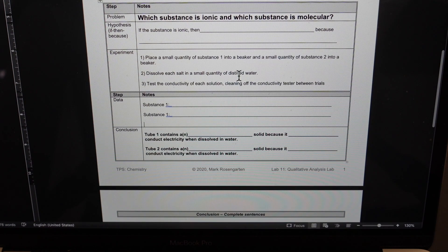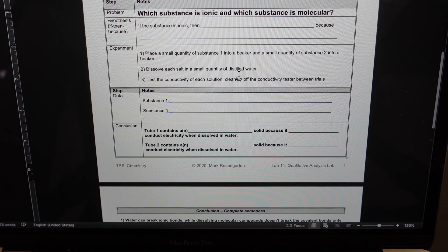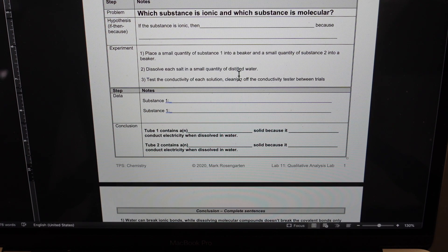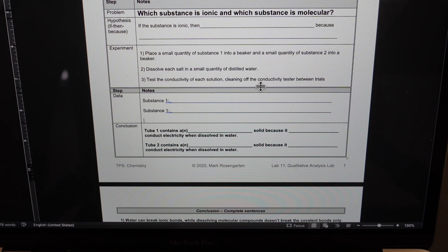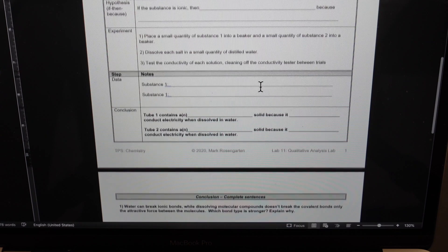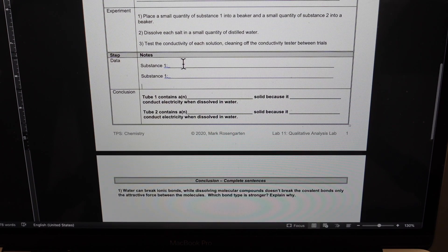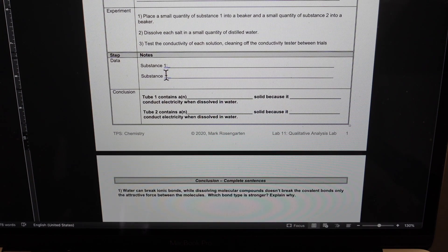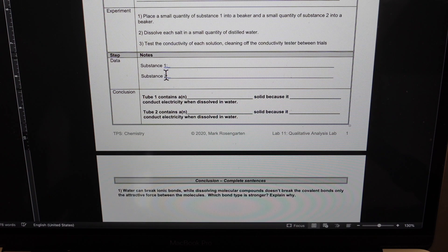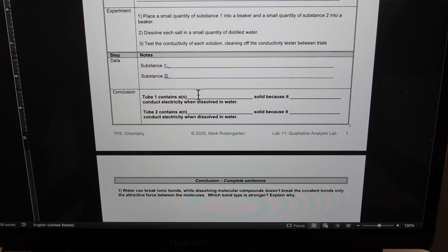Then you're going to place a small quantity of substance one into a beaker and a small quantity of substance two into another beaker. Dissolve each salt with a small quantity of distilled water and then test the conductivity of each solution, cleaning off the conductivity tester between each trial. You will collect data as to whether substance one conducts electricity or not and whether substance two conducts electricity or not.